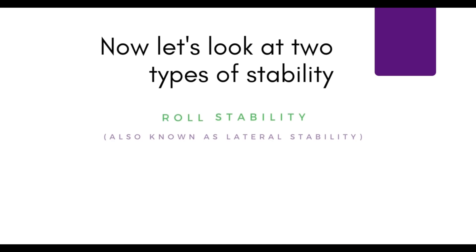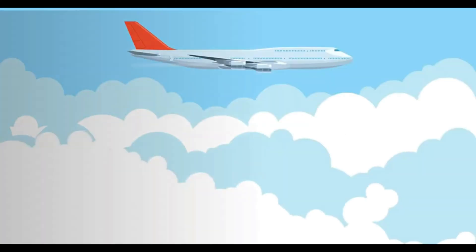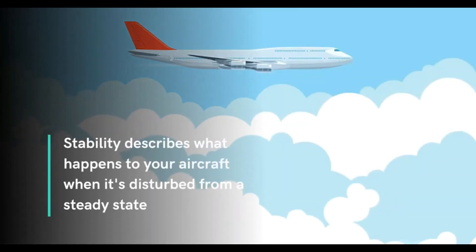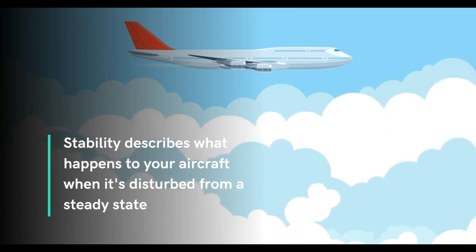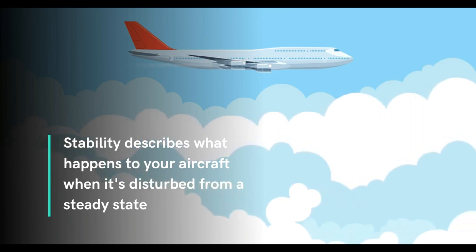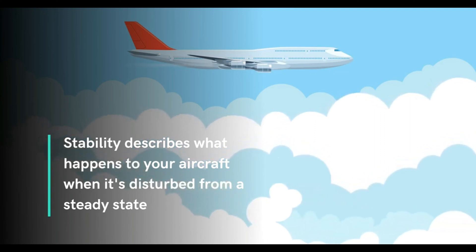Now, let's look at two types of stability: roll stability, also known as lateral stability, and yaw stability. Stability describes what happens to your aircraft when it's disturbed from a steady state.